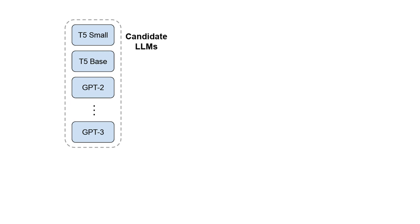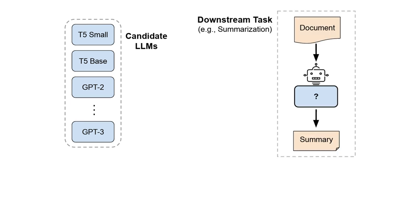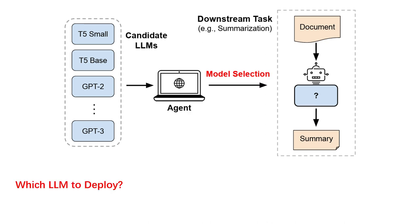Suppose we have a set of candidate large language models with different parameter sizes and different architectures, and we also have a downstream task — for example, the text summarization task. The problem here is: which large language model should we deploy for this downstream task?